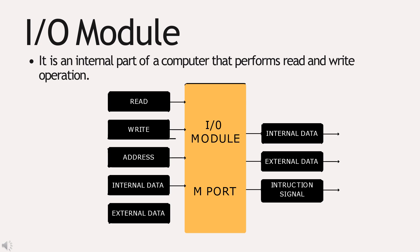Input and Output Module: It is an internal part of a computer that performs read and write operations. An input and output module has two major functions to perform: interface to the processor and memory, and interface to one or more periphery devices by tailored data links. It contains logic for performing a communication function between the periphery and the bus.